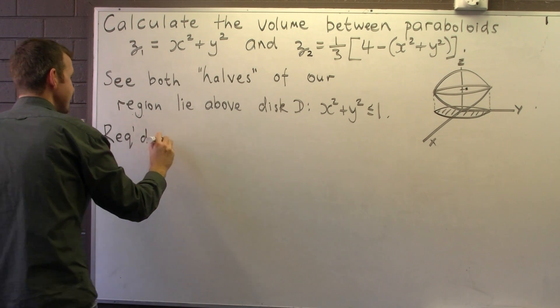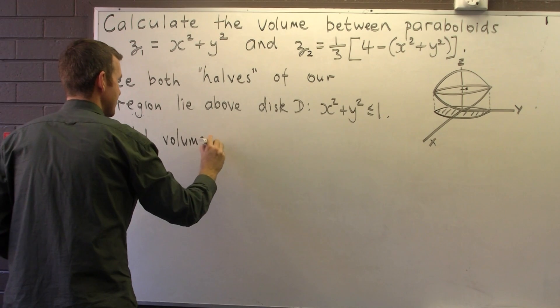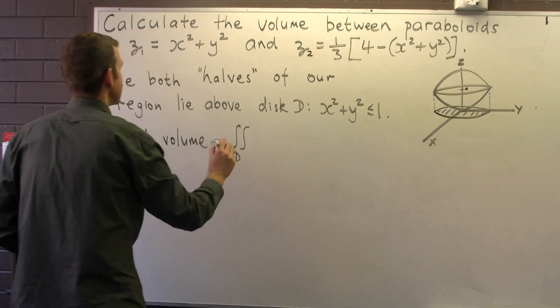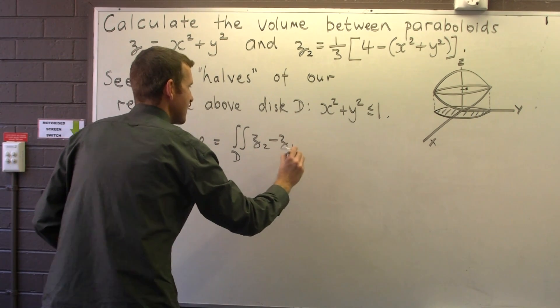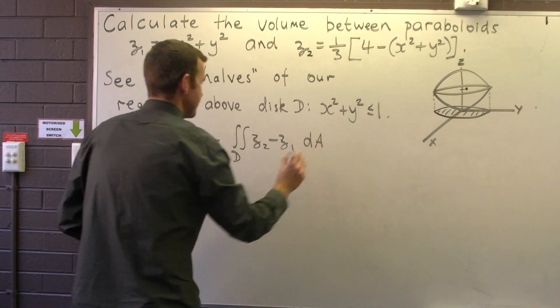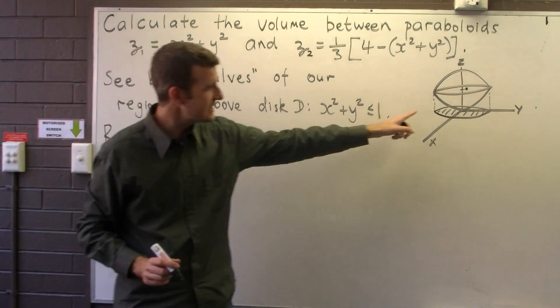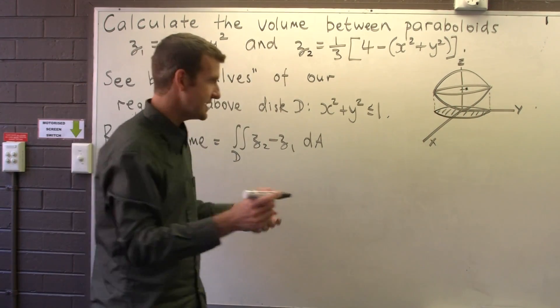So the required volume is just this following double integral. Now, you'll see that D is the shaded region, D is a disk.